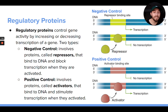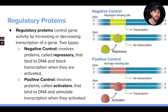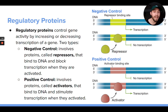Activator proteins are a different type of regulatory protein that also bind to regulatory sequences in your DNA. When activator proteins bind to those sequences, they cause transcription of certain genes to start occurring or to increase. They increase the transcription of certain genes by binding to your DNA, and we call that positive control.